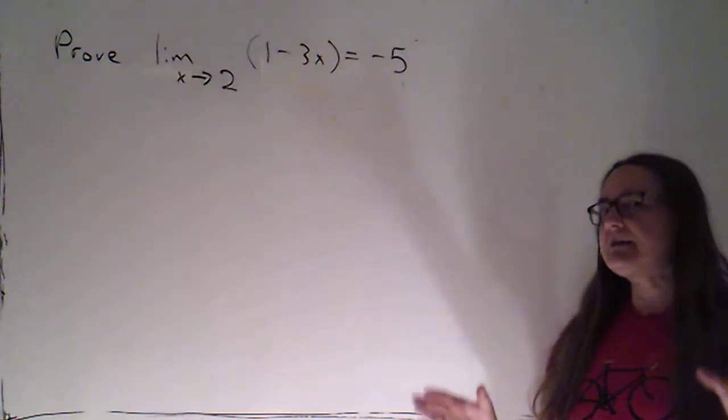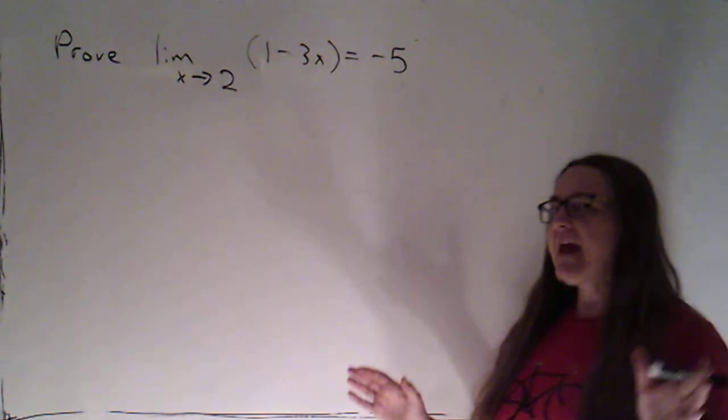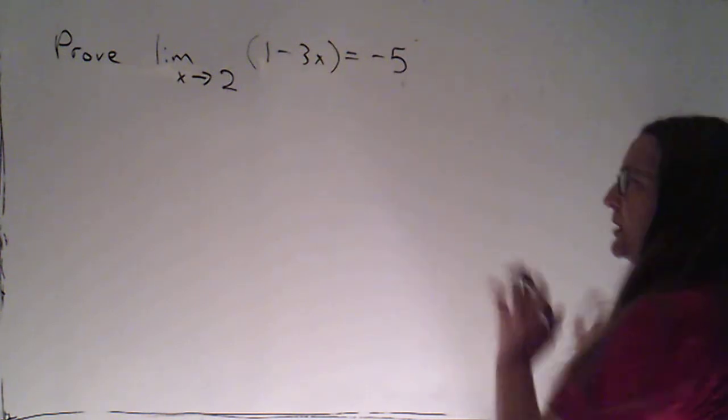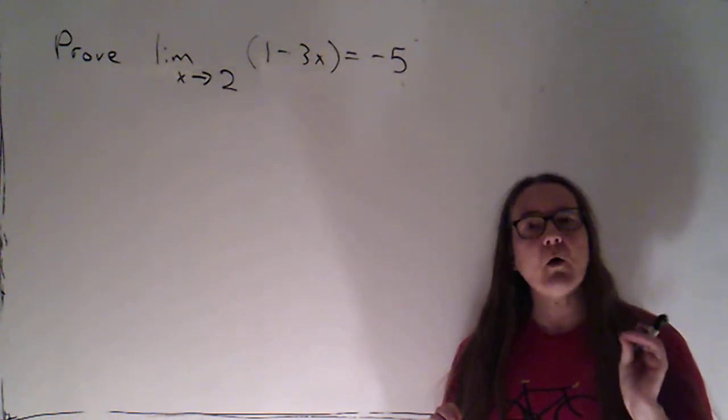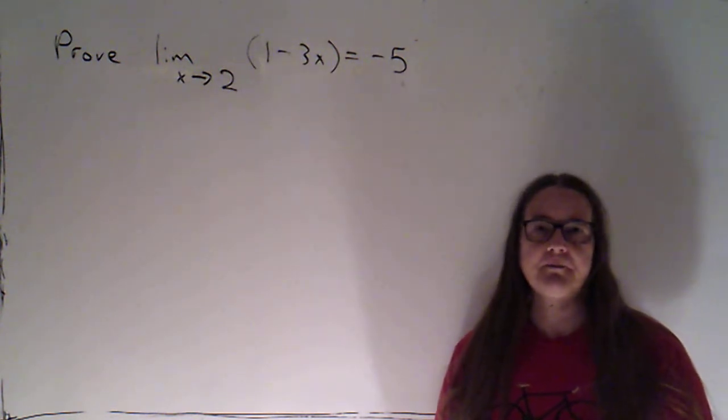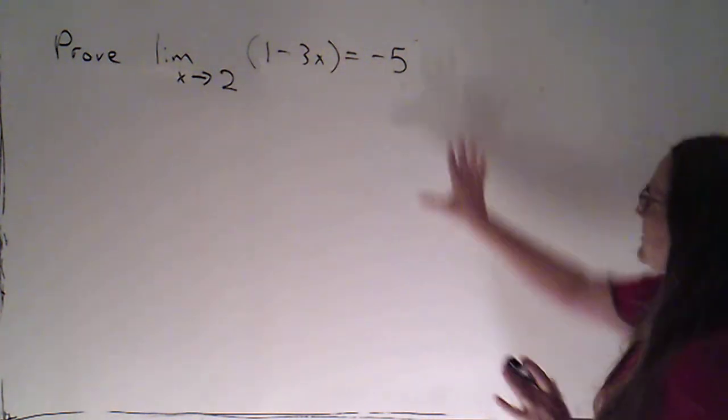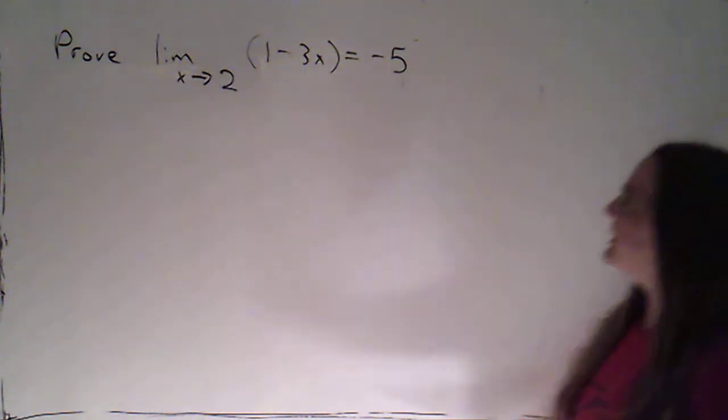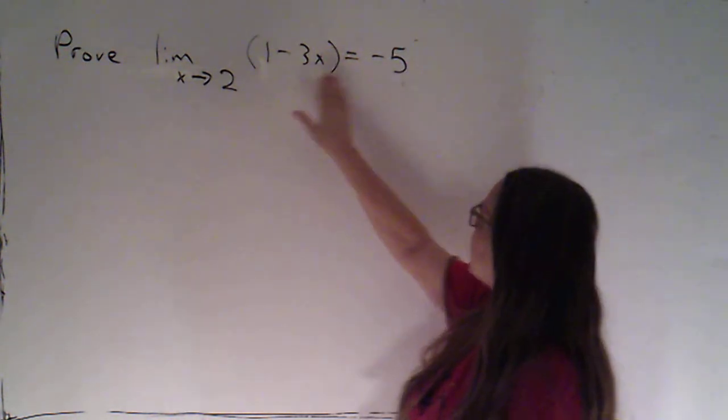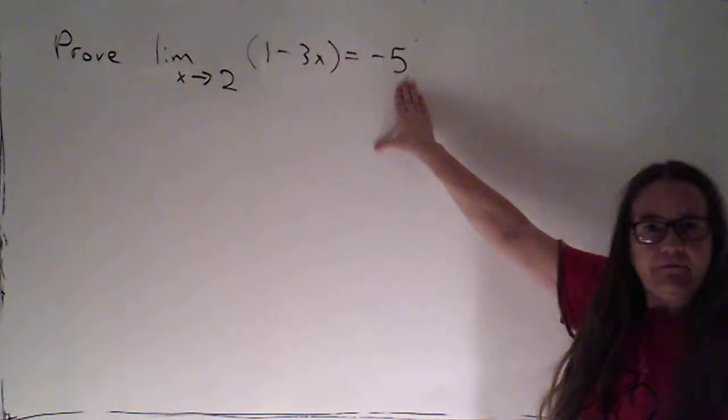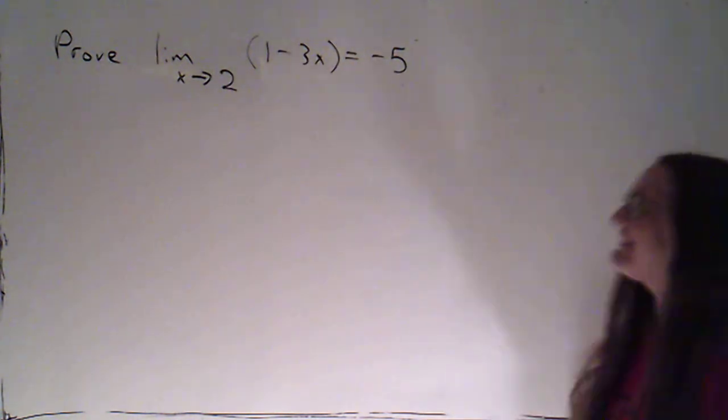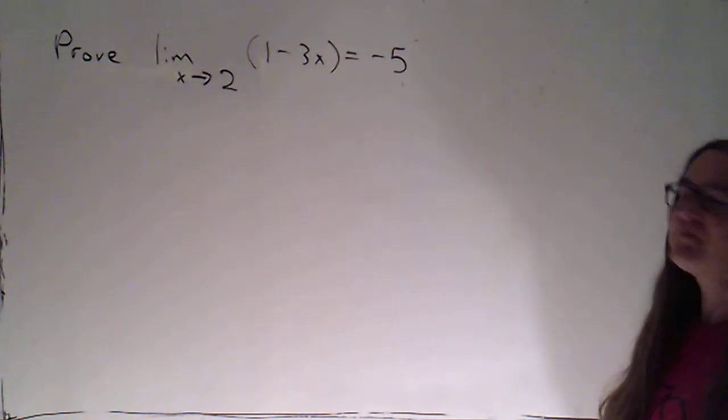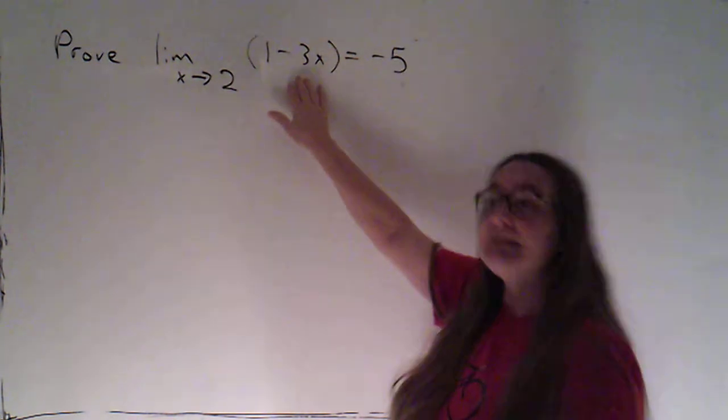We're now ready to do our first formal proof where we're going to keep epsilon as a variable, so we won't have a numeric value for it. So here's the limit that we're going to prove: We're looking at the limit as x goes to 2 of 1 minus 3x, and it equals negative 5, which we can confirm very easily. If we were to plug in 2 for x, we would get that. This is a continuous function. I want to just point out this is a linear function.